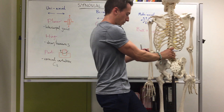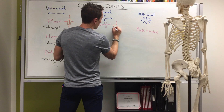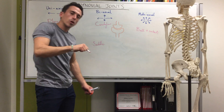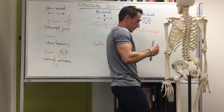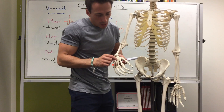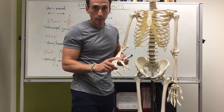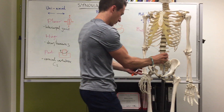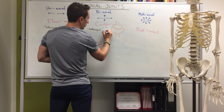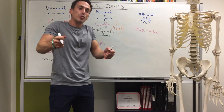Now moving into the biaxial realm — a condylar joint can rock back and forward and left and right. A condylar joint is typically found between the metatarsal and the proximal phalanx. That joint between the metatarsal and the proximal phalanx is what we call the condylar joint.